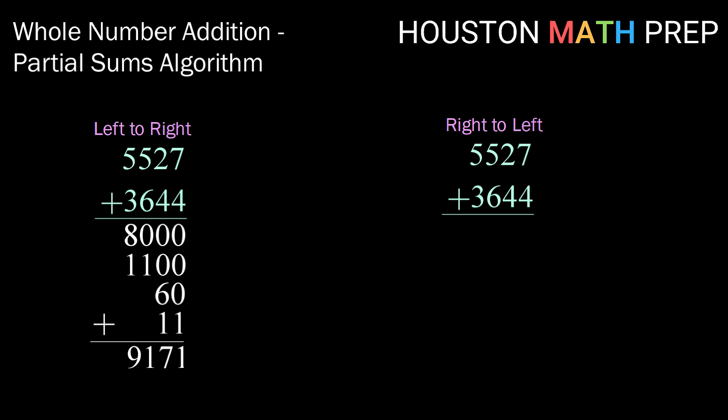Of course that same problem can be done right to left and just like last time, you're just going to see those values swap order. So starting in the ones digits, 7 plus 4 gives us 11. Moving now to the tens place, 20 plus 40 gives us 60.